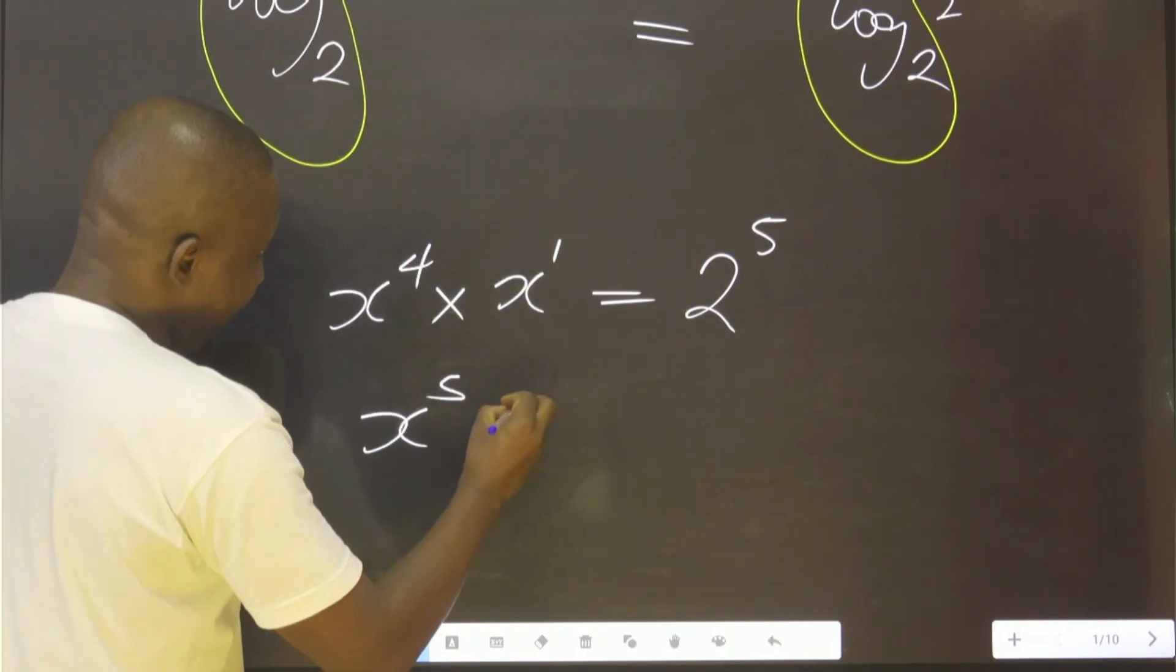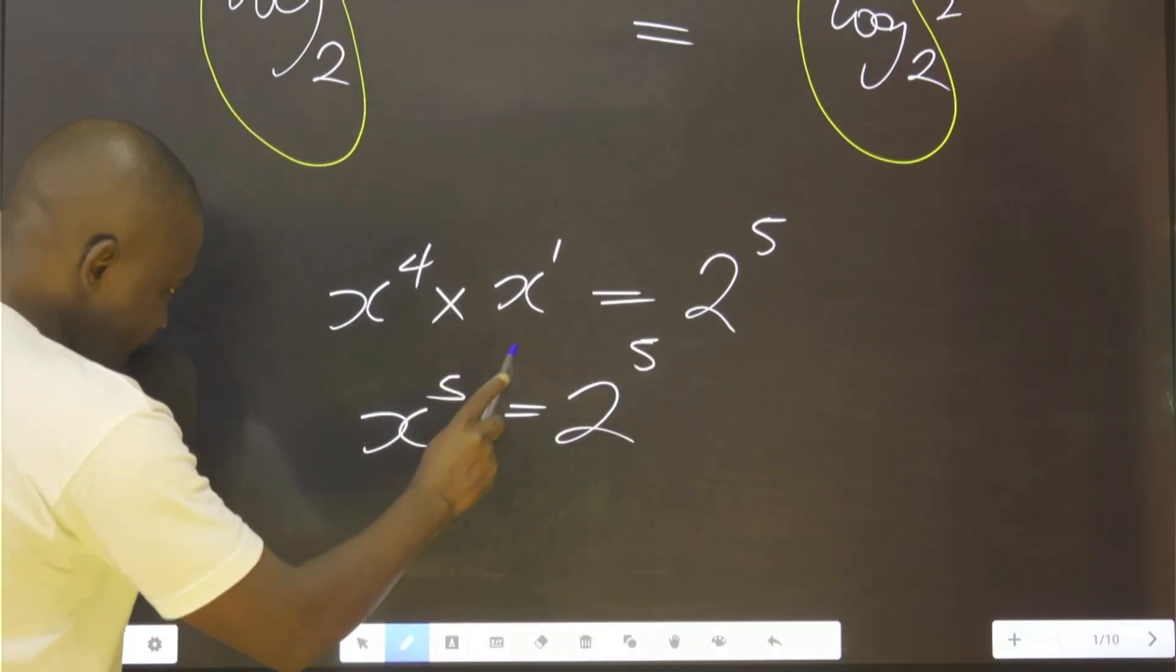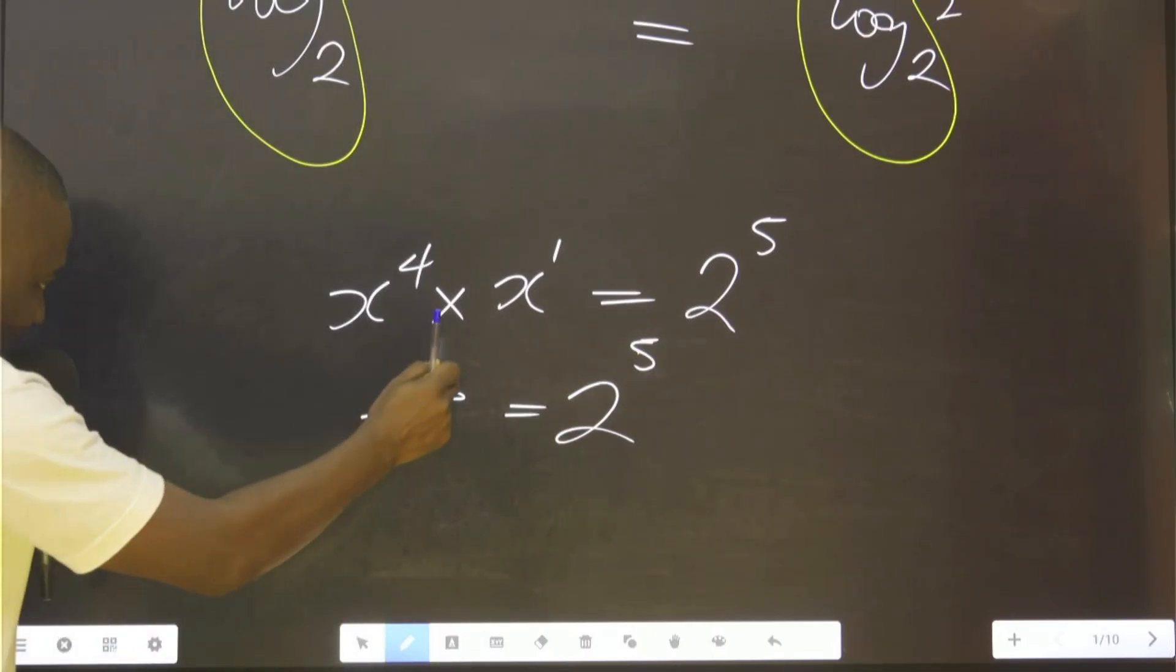You work this out now. It is 4 plus 1, which is 5, equals to 2 raised to the power of 5. What can you see? 5 is here, 5 is here, because these and these are equal.